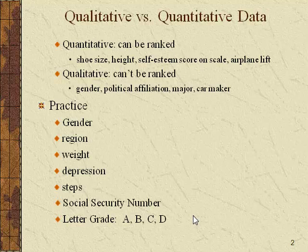Gender is going to be qualitative — you can't rank male and female, they're just different categories. Region someone comes from, like the Northwest versus the Southeast — again, not rankable, just different categories. Weight would be rankable; most anything that's a physical dimension can be measured quantitatively. Number of steps somebody takes between their dorm room and the lecture hall would also be quantitative.